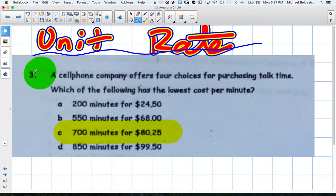Okay, unit rate. So this is another EQAO question. I'll read it. It's a little grainy, but better than the last. A cell phone company offers four choices for purchasing talk time. Which of the following has the lowest cost per minute? Now, they didn't give us any company names. They've just given us a bunch of rates, right?